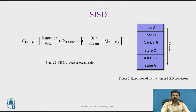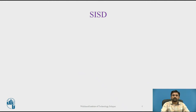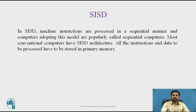The SISD processor organization is also called a scalar processor — one instruction at a time, and each instruction has only one set of operands. Single instruction means only one instruction stream is being acted on by the CPU during any one clock cycle, and single data means only one data stream is used as input during one clock cycle. Instructions are executed sequentially. In SISD machines, instructions are processed in a sequential manner, and computers adopting this model are popularly called sequential computers.